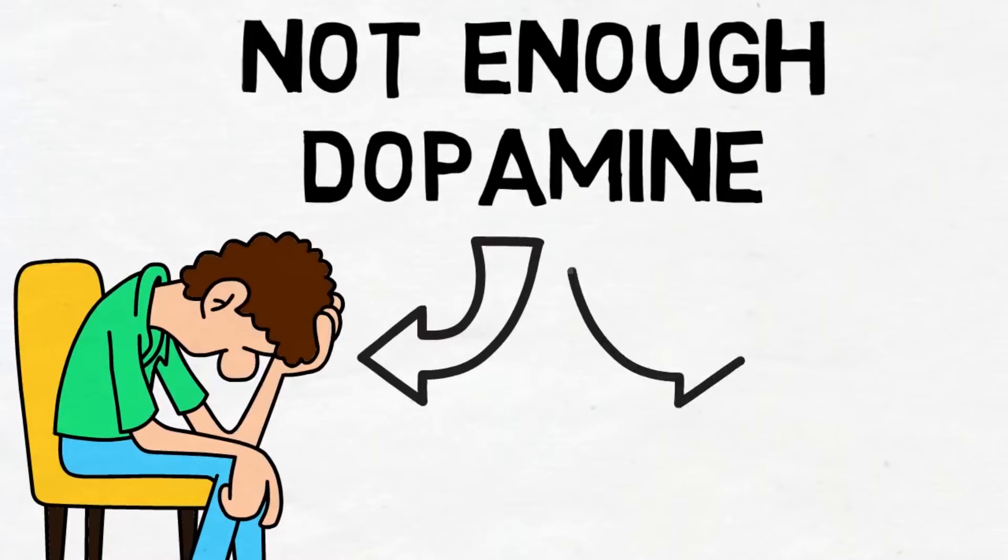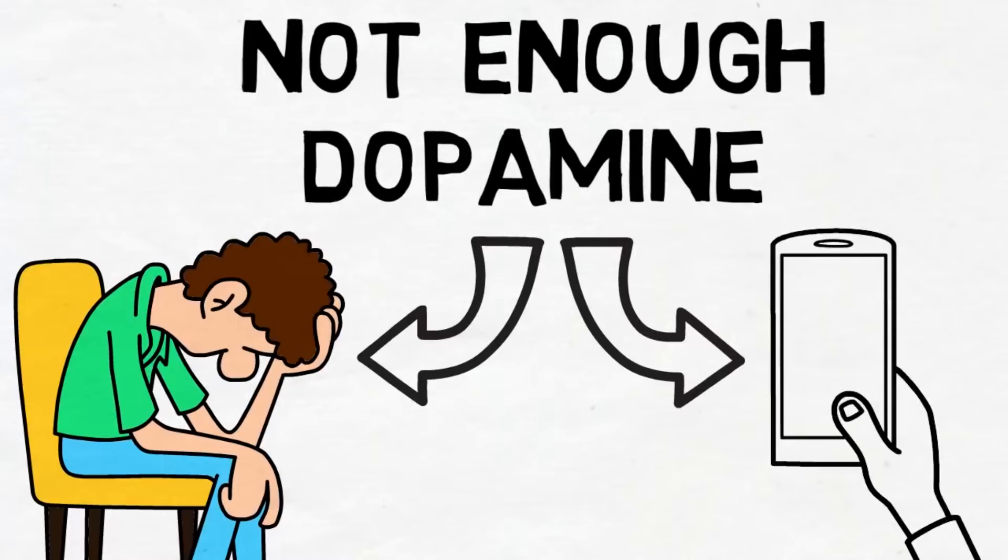And it's not just drug addicts. People who are addicted to video games, social media, or internet pornography experience the same thing. Once their dopamine tolerance gets too high, they simply aren't able to enjoy low dopamine behaviors. Which begs the question, is there anything that can be done to prevent this?